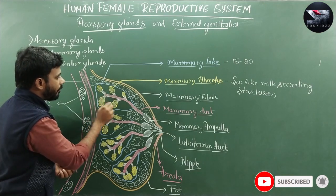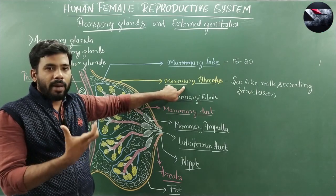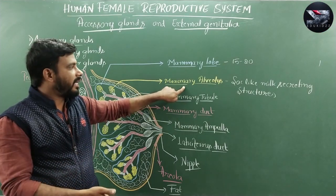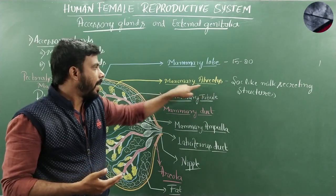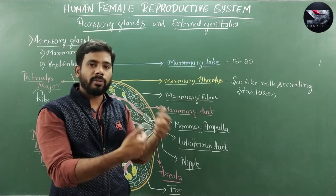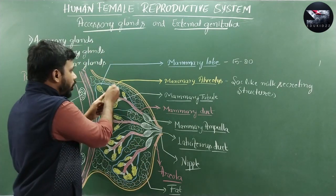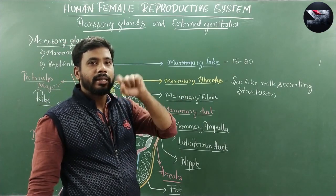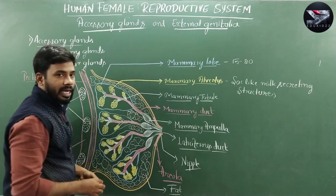The development of mammary alveoli takes place during the middle of pregnancy. Note that alveolus is singular and alveoli is the plural. At the end of pregnancy the mammary alveolus is fully developed and secretion of milk takes place. The milk which is secreted is stored inside the lumen of the mammary alveoli.